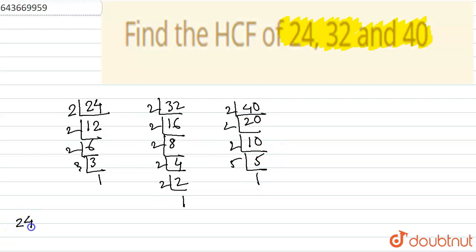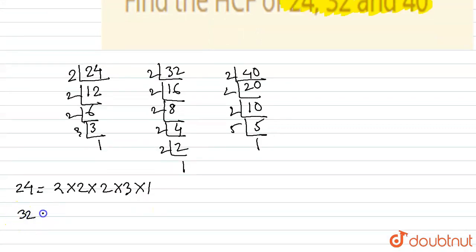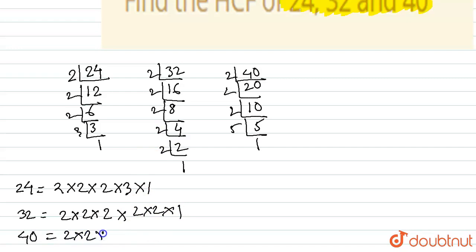So, 24 can be written as 2 into 2 into 2 into 2 into 3 into 1. And 32 can be written as 2 into 2 into 2 into 1. And 40 can be written as 2 into 2 into 2 into 5 into 1. So we have found the numbers which when multiplied will give us 24, 32 and 40.